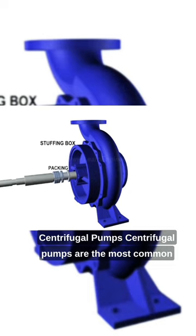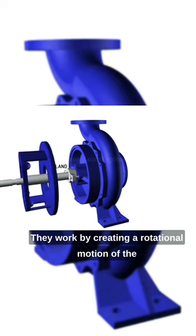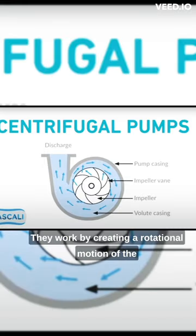Centrifugal pumps are the most common type of pump used in various industries. They work by creating a rotational motion of the fluid, which is then converted into pressure.